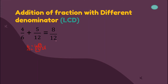So our LCD is 12. Where do I get 8 here? I take 12 divided by 6, that is 2, then 2 times 4, that is 8. The process is: divide the LCD by the denominator, then multiply with our numerator. For our second fraction, LCD is still 12: 12 divided by 12 is 1, and 1 times 5 is 5. Since we already changed them into like fractions with the same denominators, we can now add them: 8 plus 5 is 13, and copy their denominator, 12.